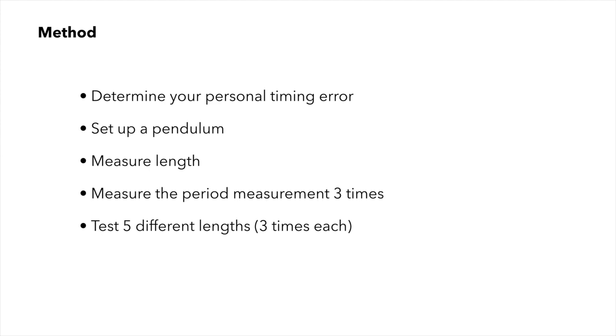Our procedure is going to look like this. We're going to first use the stopwatch to determine our personal timing error. Then we're going to set up the pendulum. We'll measure the length from the pivot point to the center of mass of the bob. We're going to make the period measurement for that length 3 times. And then we will test 5 different lengths. So we'll have a total of 15 data points when we're done, at least. Feel free to take more.